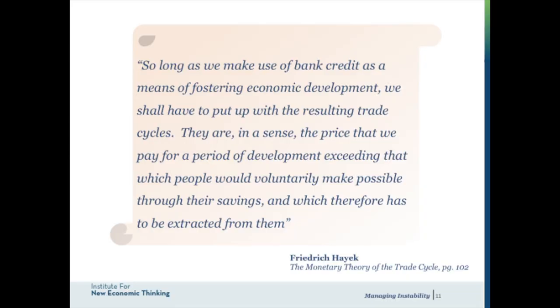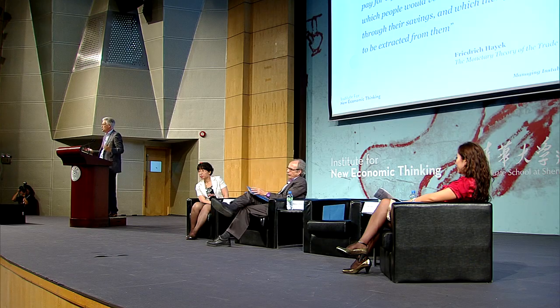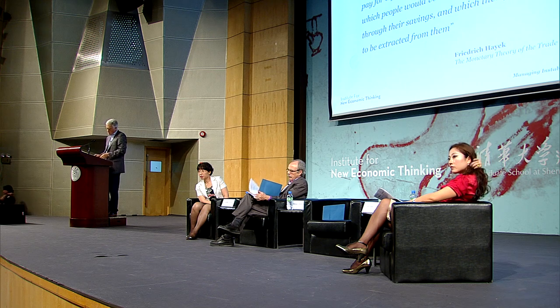What can we do about it? Hayek himself thought we could do very little. He basically said that as long as we make use of bank credit as a means of fostering economic development, we shall have to put up with the resulting cycles — there was nothing we could do. But I don't think that is adequate, because the more the development process continues and the more complex the financial system becomes, the danger of the credit cycle producing harm becomes so big that we cannot adopt Hayek's attitude that it's just an inevitable by-product of a rapid development process.